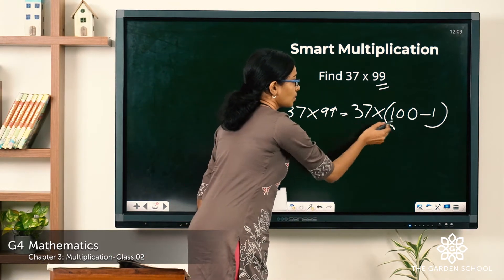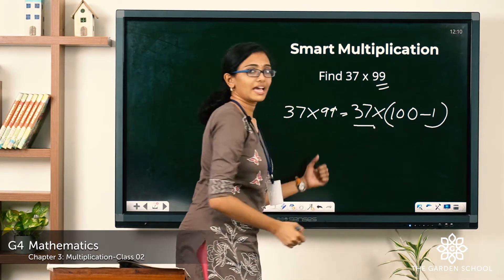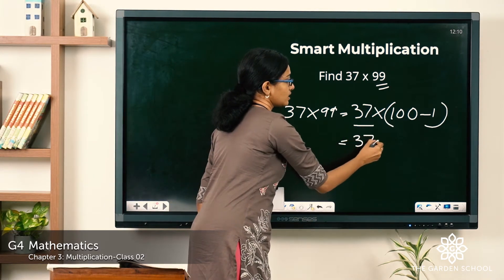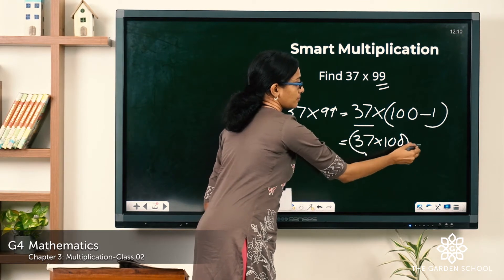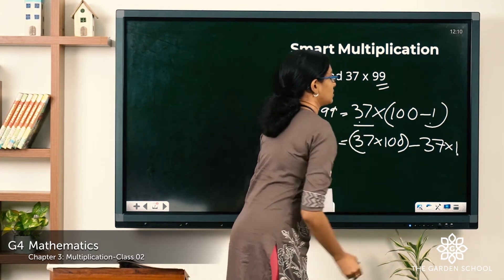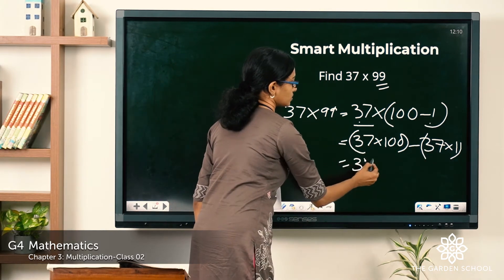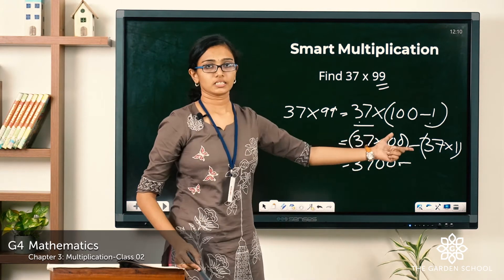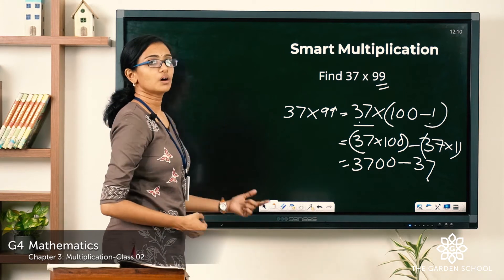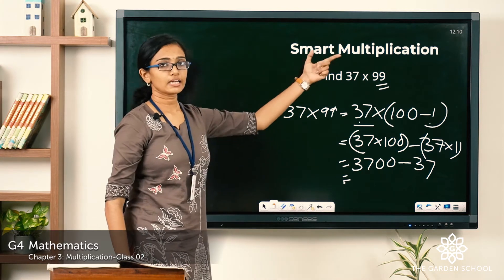So when you write something in bracket and write something to the left of it, this will be applicable to everything inside the bracket. So this can be expanded as 37 into 100 minus 37 into 1. Now what is 37 into 100? It is 3,700 minus 37 into 1 which is equal to 37.